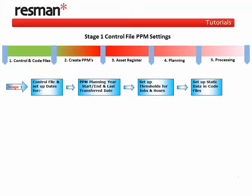Stage 1 covers the control file and the supporting work code files, which are found in the Administration section. This is where we set up our planning year start and end dates. The system has been designed to conform to an ISO-compliant PPM year, and ResMan support staff can give further details if required. We can also set up target planning thresholds as numbers of jobs and required hours, and this feature uses traffic light colour coding to highlight work demand in the annual plan, assisting capacity planning.